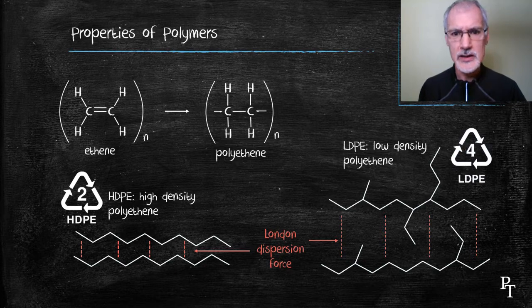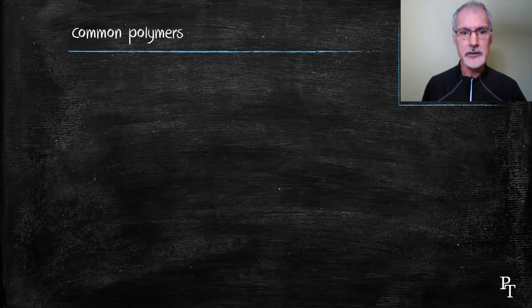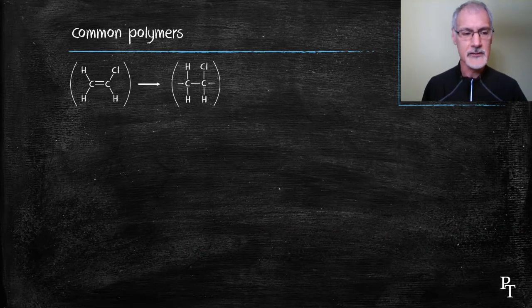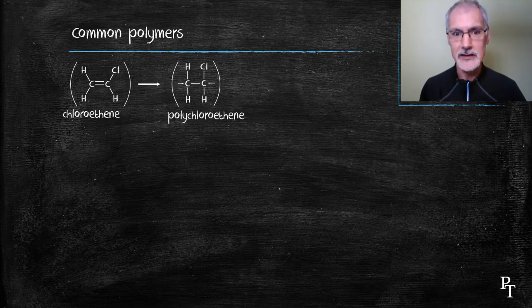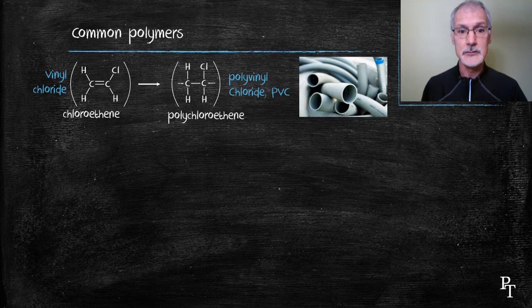There are also some other polymers we can make starting with basically the ethene molecule and substituting groups on it. So here, if I put a chlorine in place of one of the hydrogens, I start with chloroethylene and can make polychloroethylene. In older times this was named vinyl chloride and hence the polymer polyvinyl chloride and that particular material is found a lot in plastic piping.